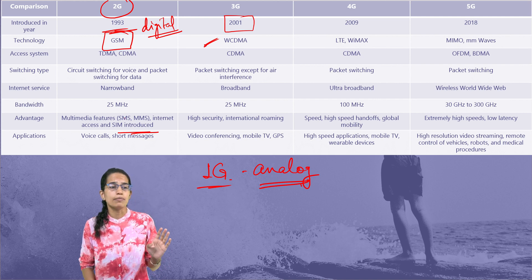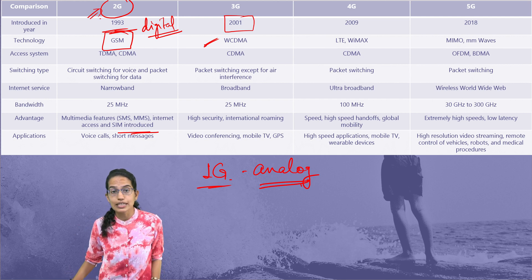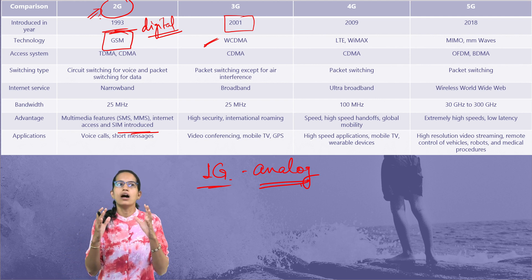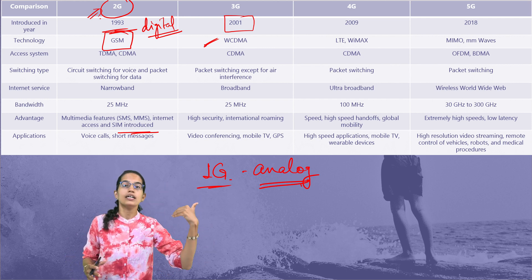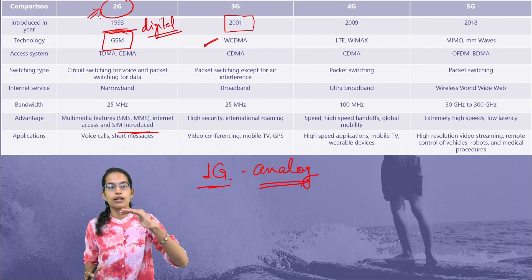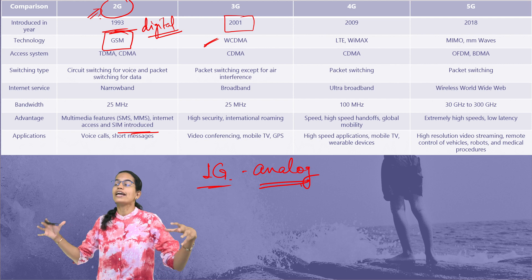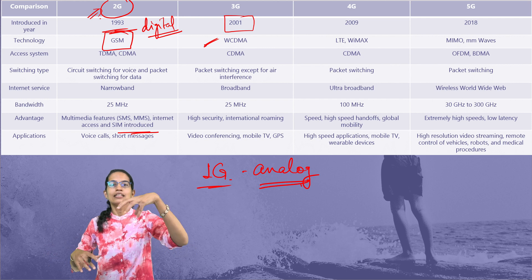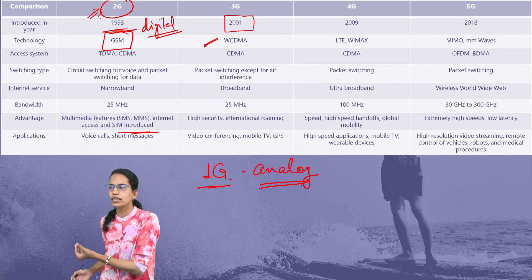Another important feature under 3G was the introduction of international roaming, which was not available with 2G. Connectivity became stronger. Voice calling was a feature introduced in 2G, but here voice plus video — audio-visual — meaning video conferencing became available with the advent of 3G technology. Also, triangulation technology developed using three satellites to identify location, used in GPS devices, which we commonly use today as Google Maps.